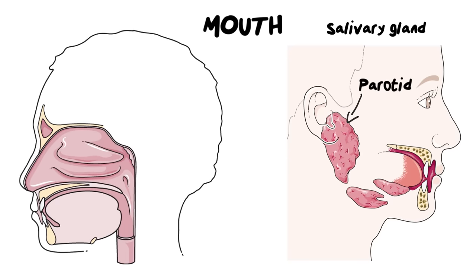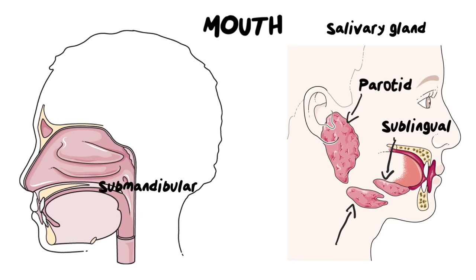The second pair of glands sit just under your tongue — that one is called the sublingual, which makes sense because 'lingual' relates to language and speaking, so it's the one under your tongue. And then the last one, underneath in your lower jaw, is called the submandibular, because it sits in the mandible — the lower jaw.